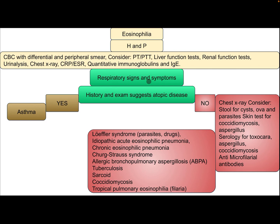If respiratory signs and symptoms are present and history and exam suggest atopic disease, this could be asthma. If atopy is not suggested, the patient needs chest x-ray; consider stool for cysts, ova, and parasites; skin test for coccidiomycosis and Aspergillus; serology for Toxocara and Aspergillus; and antimicrofilarial antibody.